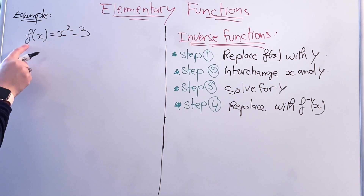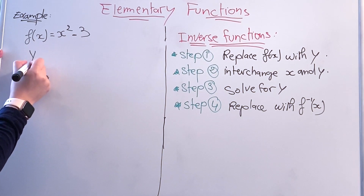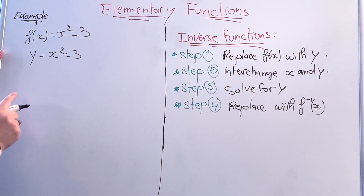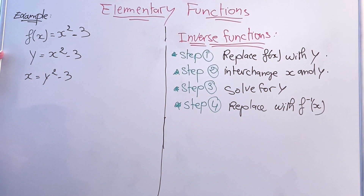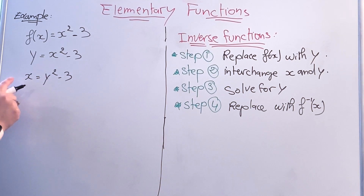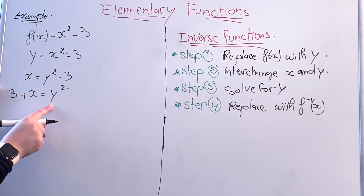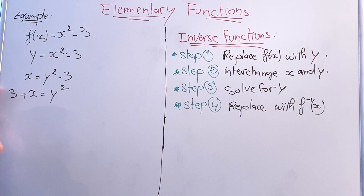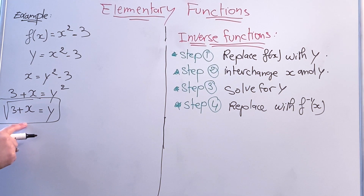Another example: find the inverse of f(x) equals x squared minus 3. Replace f(x) with y: y equals x squared minus 3. Interchange x and y: x equals y squared minus 3. Solve for y by adding 3 to both sides: x plus 3 equals y squared. Then take the square root: y equals the square root of x plus 3. So f inverse of x equals the square root of x plus 3.